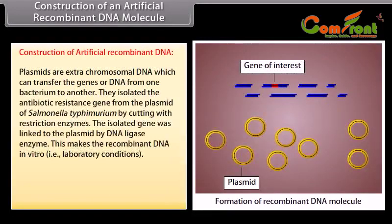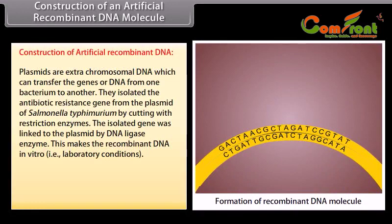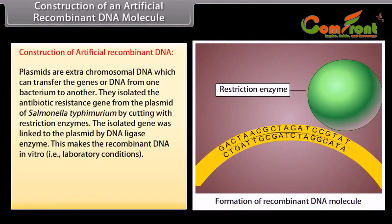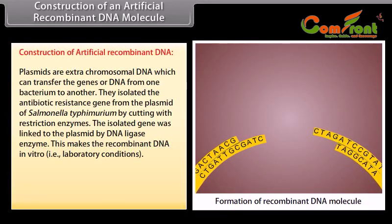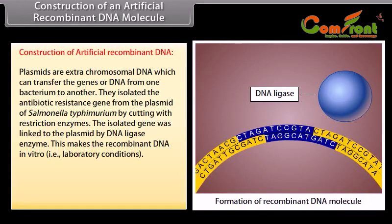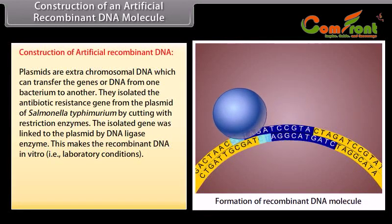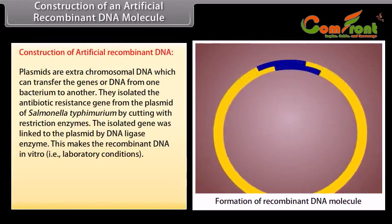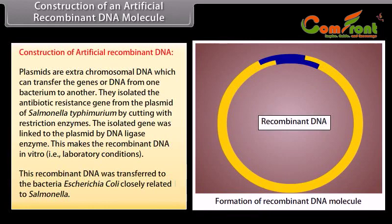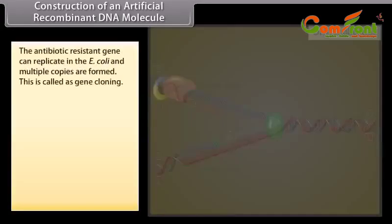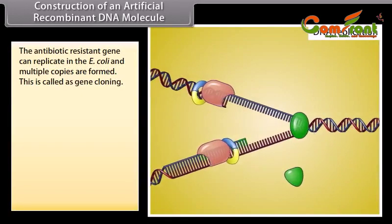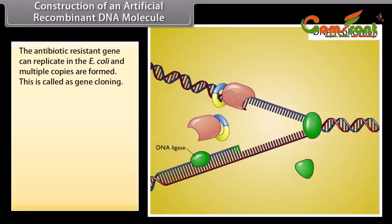Construction of artificial recombinant DNA. Plasmids are extra-chromosomal DNA which can transfer genes or DNA from one bacterium to another. They isolate the antibiotic resistance gene from the plasmid of Salmonella typhimurium by cutting with restriction enzymes. The isolated gene was linked to the plasmid by DNA ligase enzyme, making the recombinant DNA in vitro. This recombinant DNA was transferred to the bacteria Escherichia coli, closely related to Salmonella. The antibiotic resistance gene can replicate in E. coli and multiple copies are formed. This is called gene cloning.